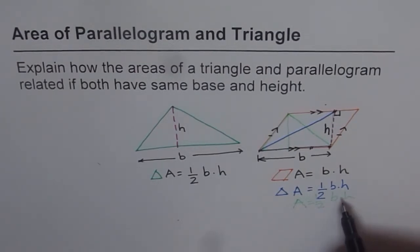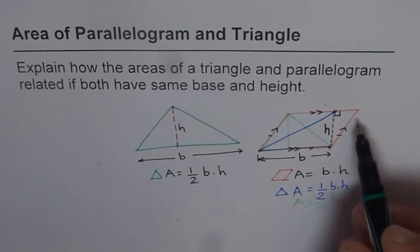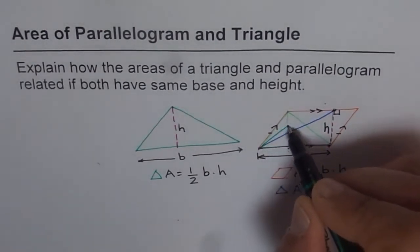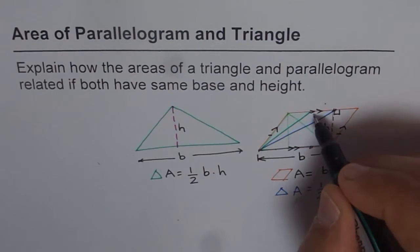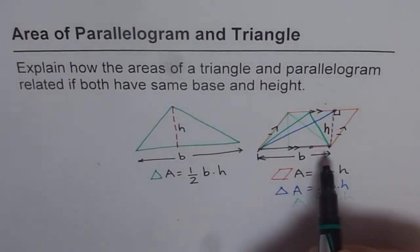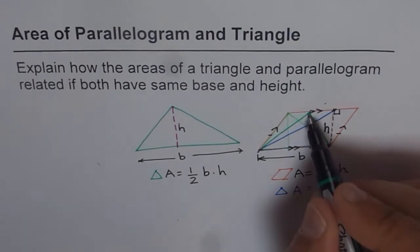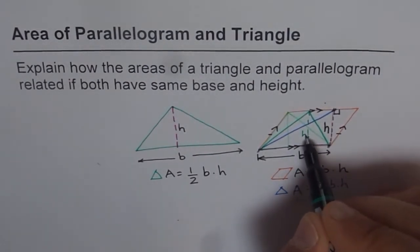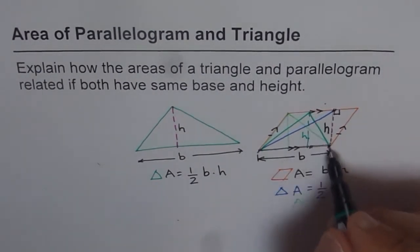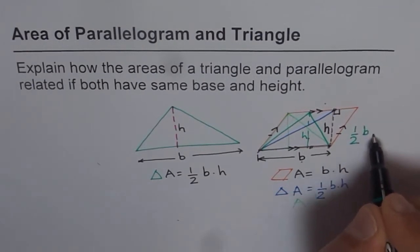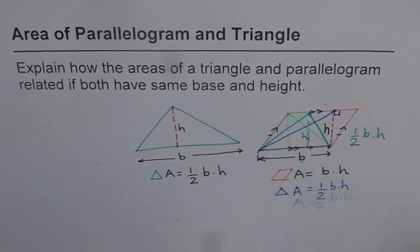That area is going to be half that of the parallelogram. Let me try one more — this time joining these two points. The base is b and the height is parallel to this, so it is also h. So the area of this green triangle is also half, same base and same height — again half of the parallelogram.